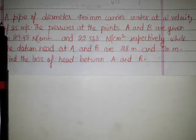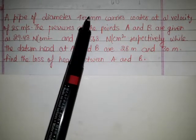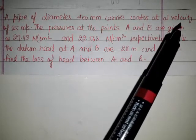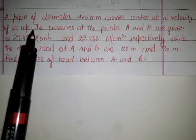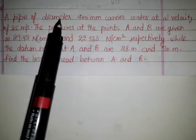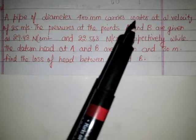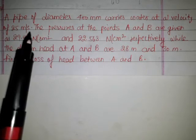A pipe of diameter 400 mm carries water at a velocity of 25 meters per second. The diameter of the pipe is 400 mm and the velocity with which fluid is flowing is 25 meters per second.